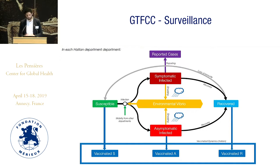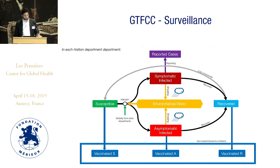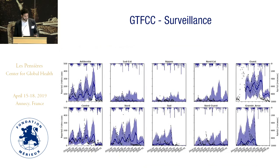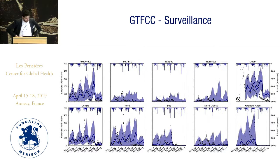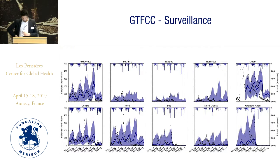There are plenty of parameters — for example, how long someone stays recovered, and how much bacteria shed in the environment will reach and be exposed to susceptible people. Some parameters we know from the literature and some we had to calibrate. That's the fit we have for the last part of 2014 and onward at departmental level. The black dots are data — reported cases from MSPP — and our model is the blue line: dark blue is the median and the rest is the confidence interval. That's the fit, which was good.